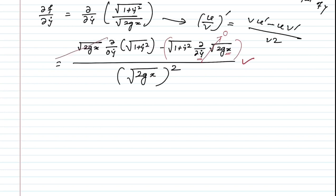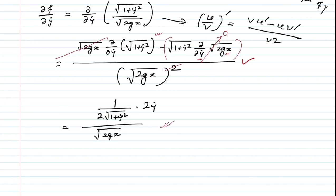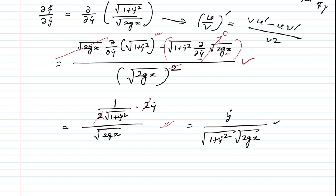After the cancellation, differentiating the numerator √(1 + ẏ²) with respect to ẏ gives us ∂F/∂ẏ = ẏ / (√(1 + ẏ²) · √(2gx)).